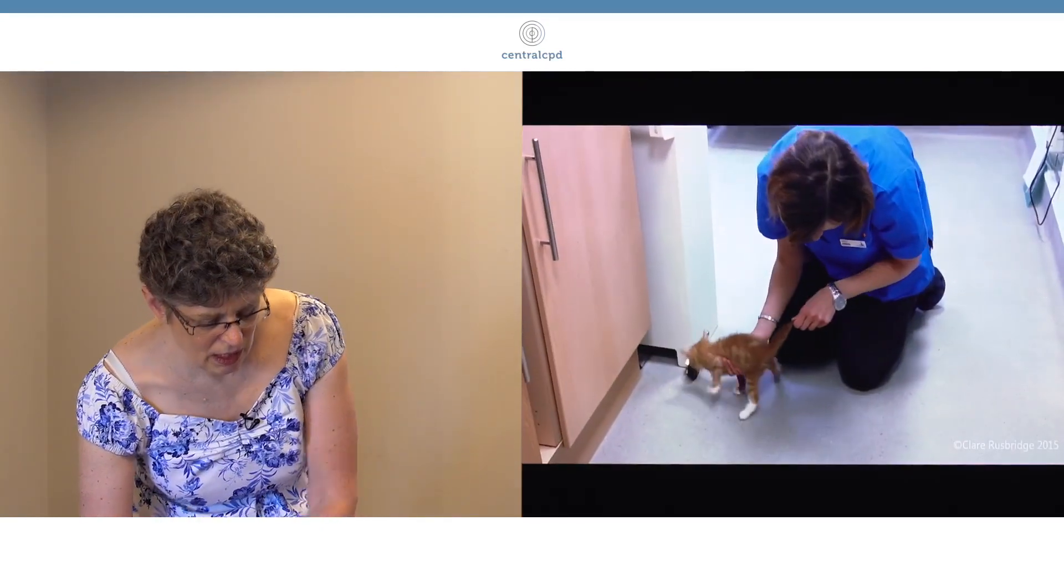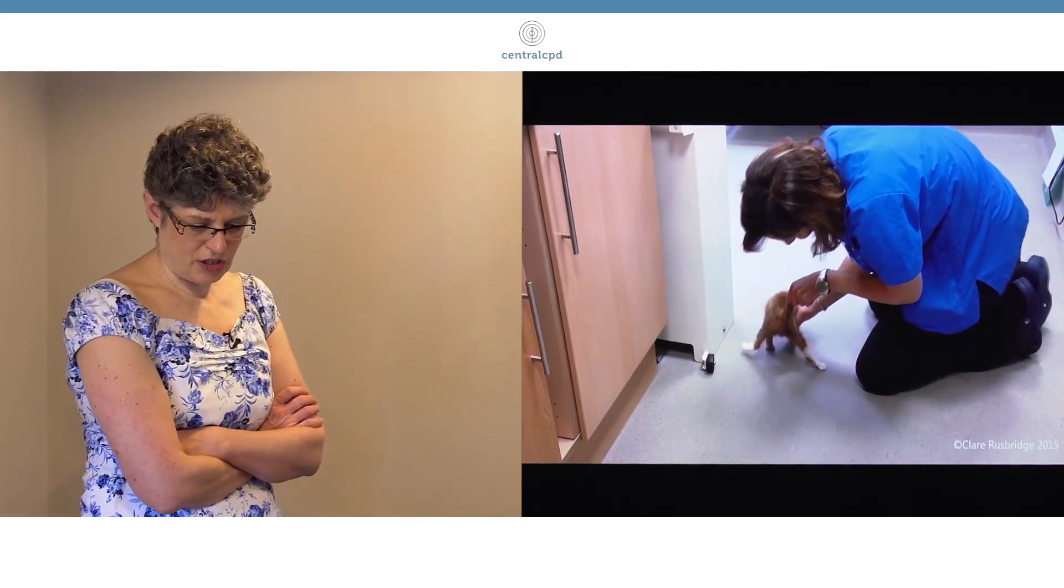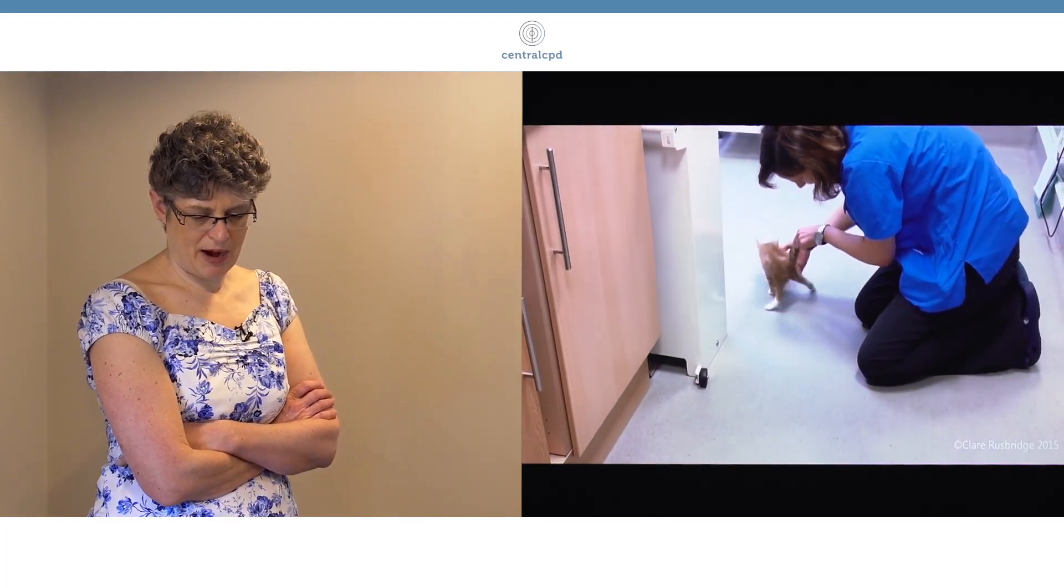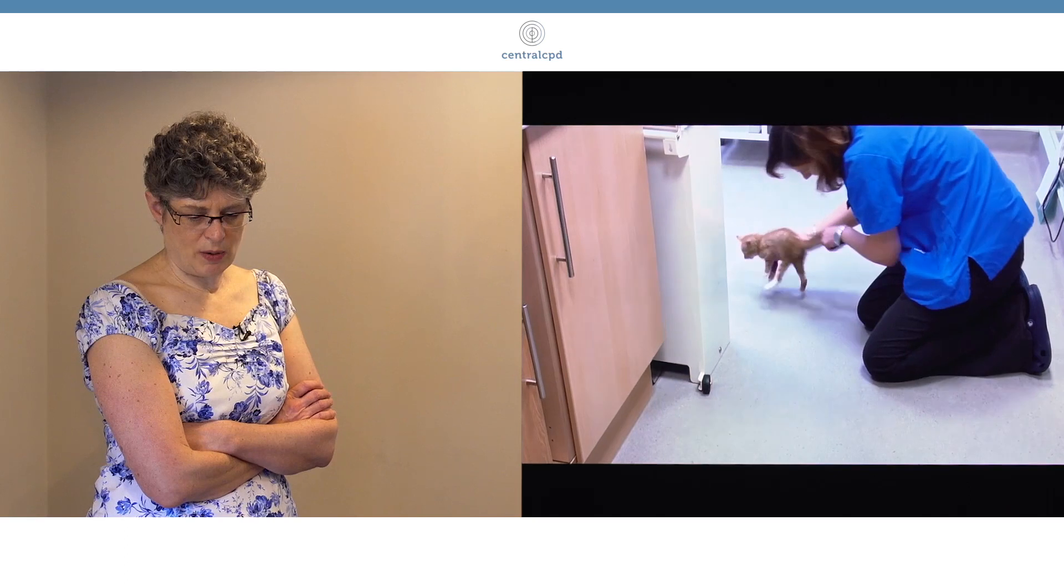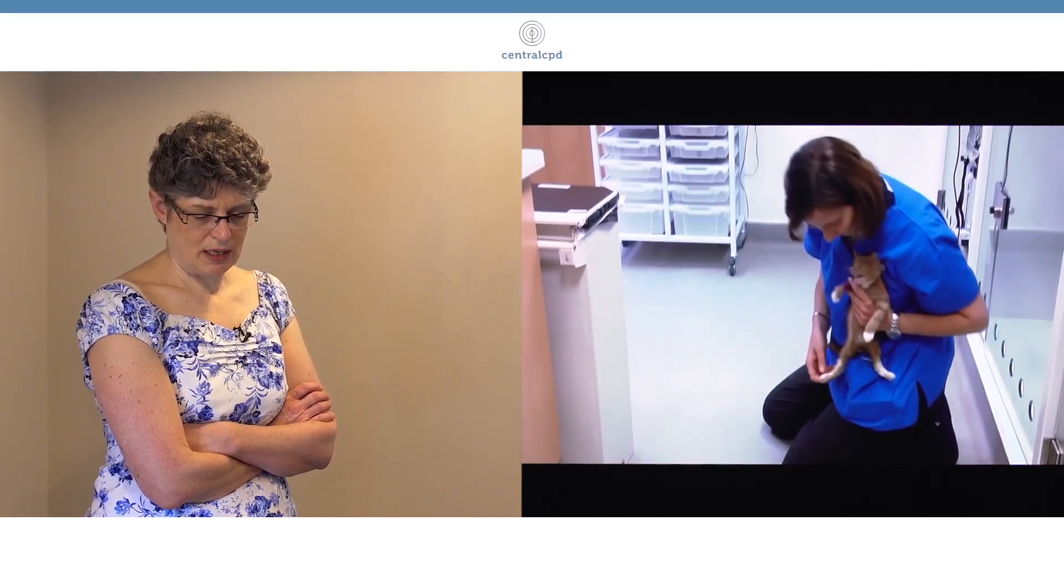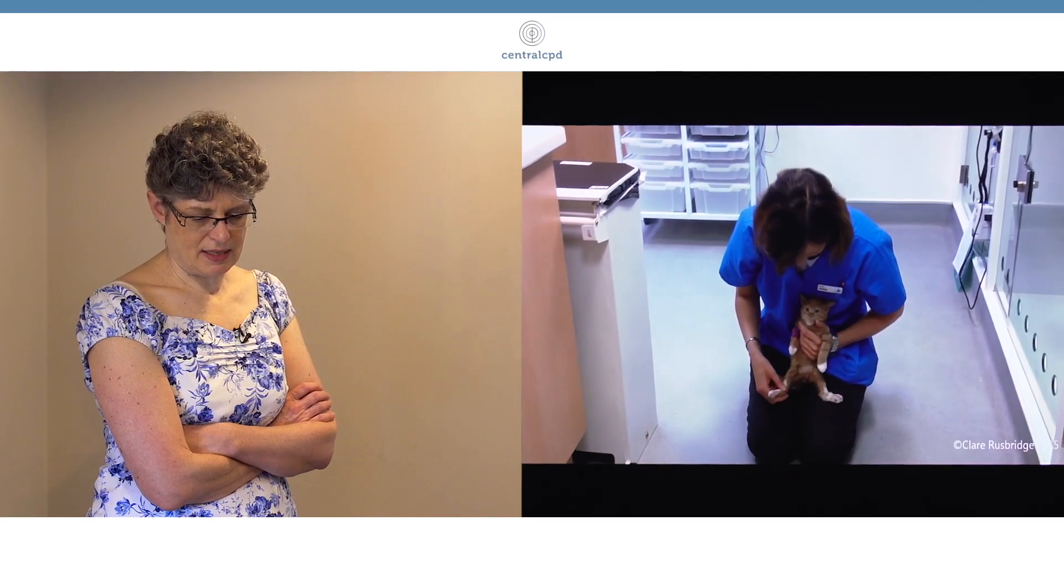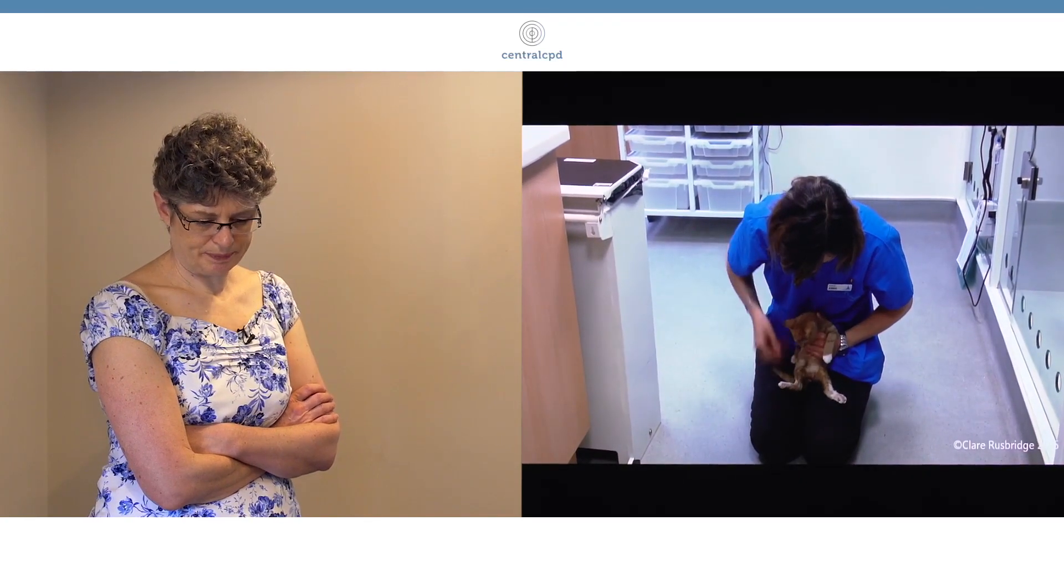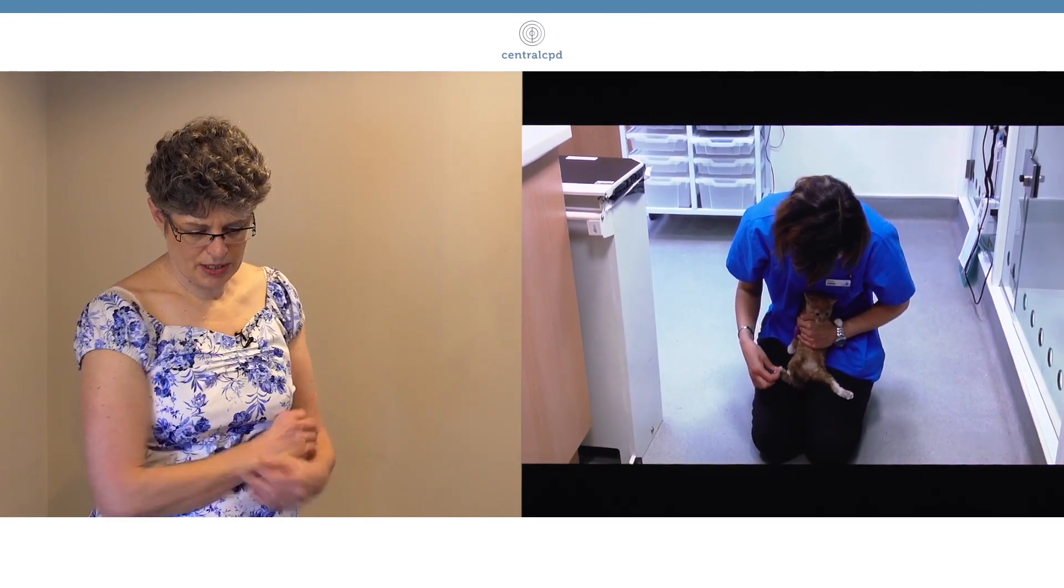The main thing you see with spinal cord disease is paraparesis, when you have a lesion from T3 downwards, as you can see in this cat here.